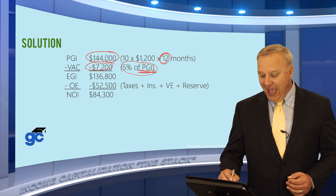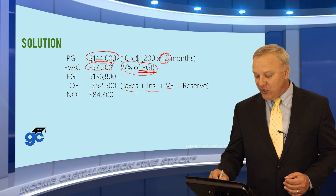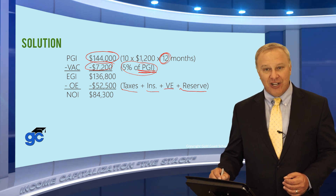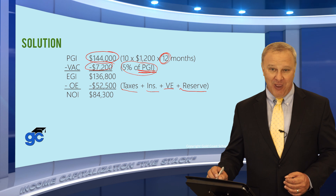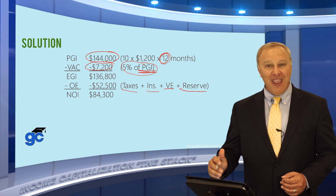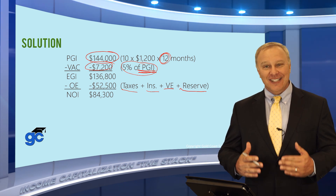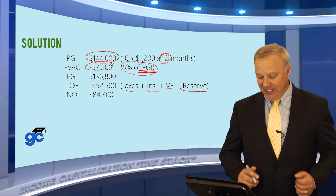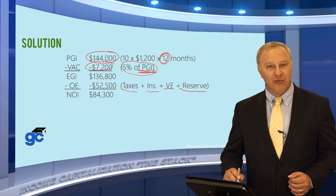Now subtract the operating expenses: taxes, insurance, variable expenses, and reserves. Reserves are considered an operating expense, but no mortgage payments — whether they call it a mortgage payment or debt service, it is not an operating expense. Once we deduct those expenses, the NOI is $84,300.